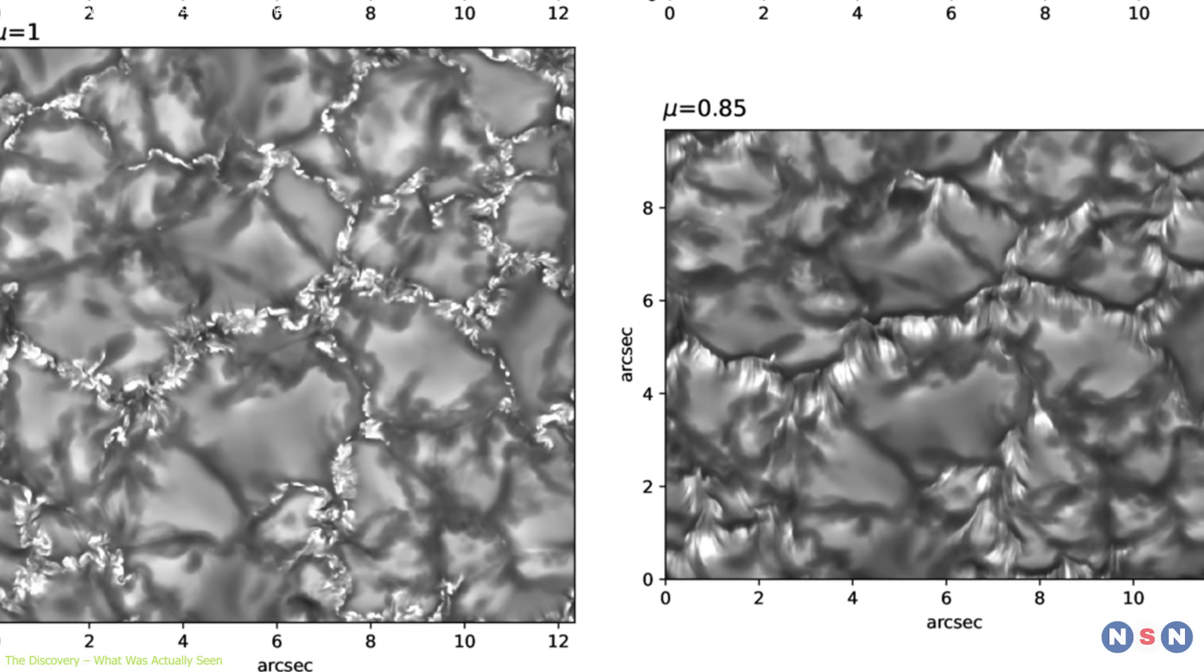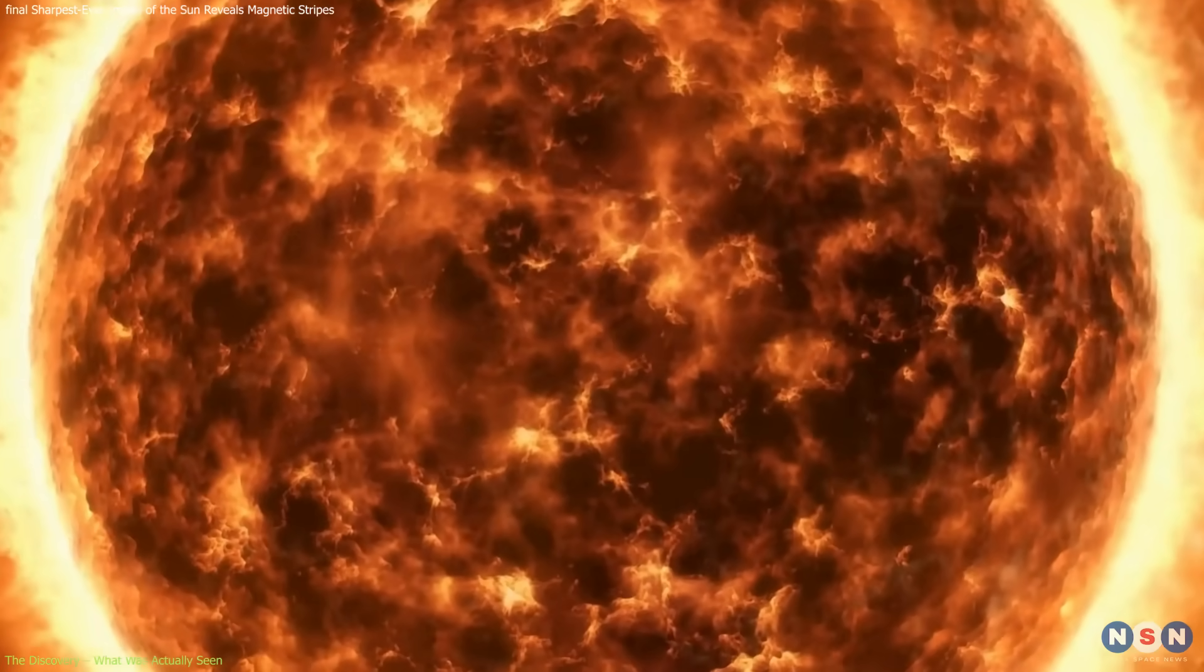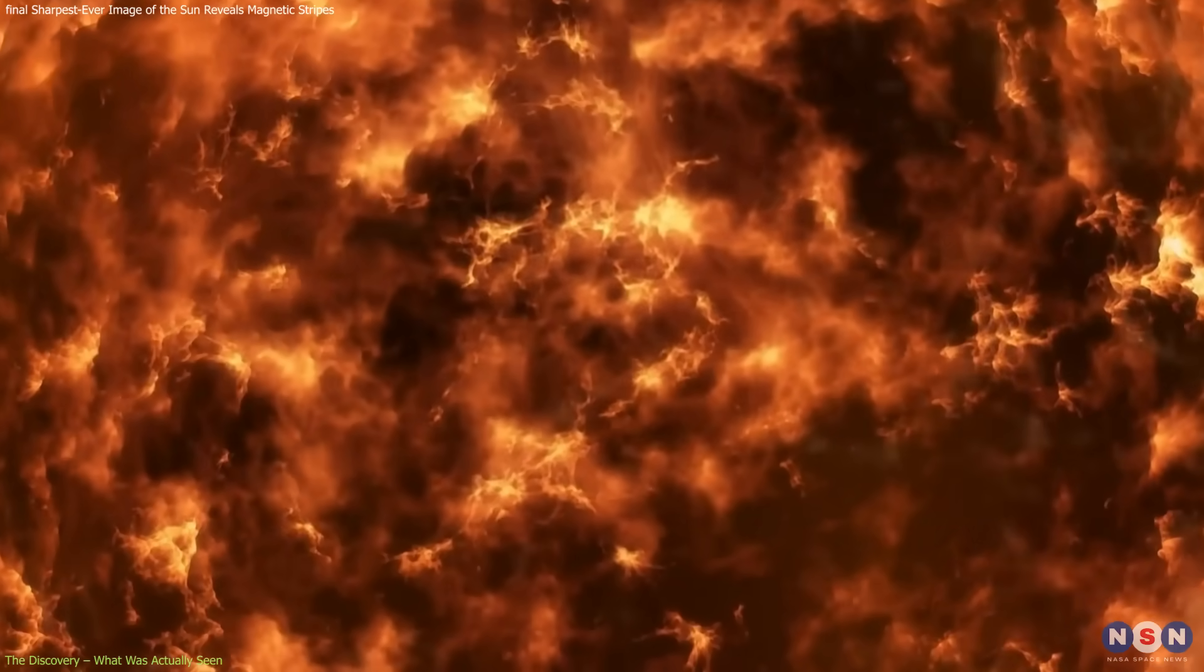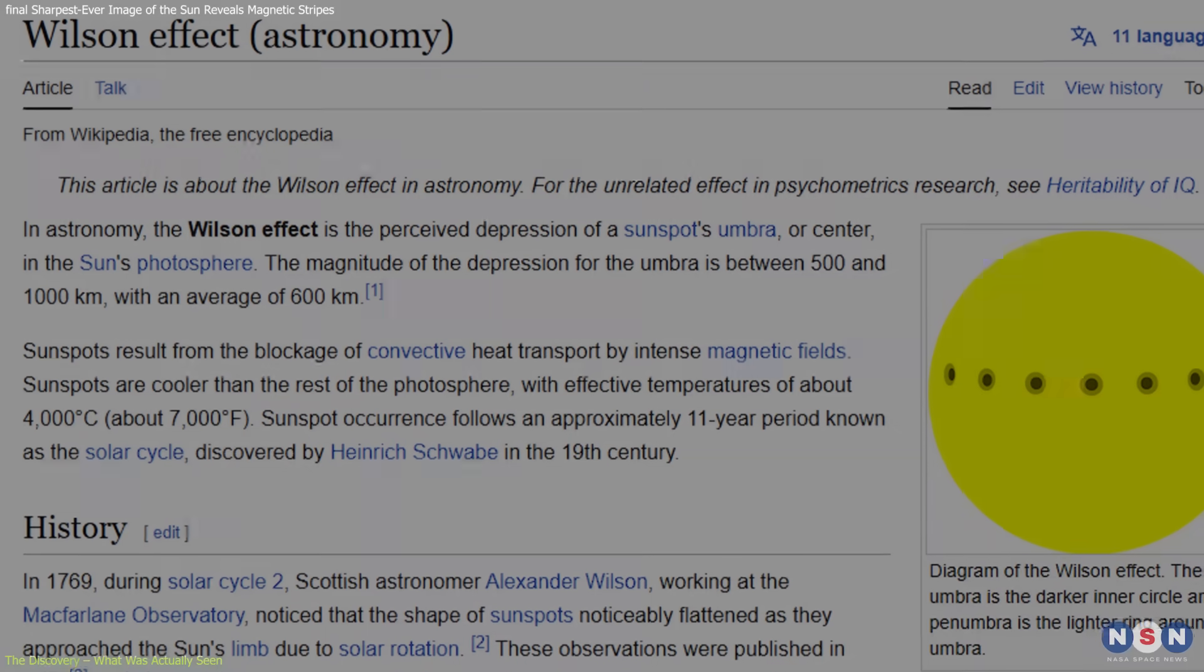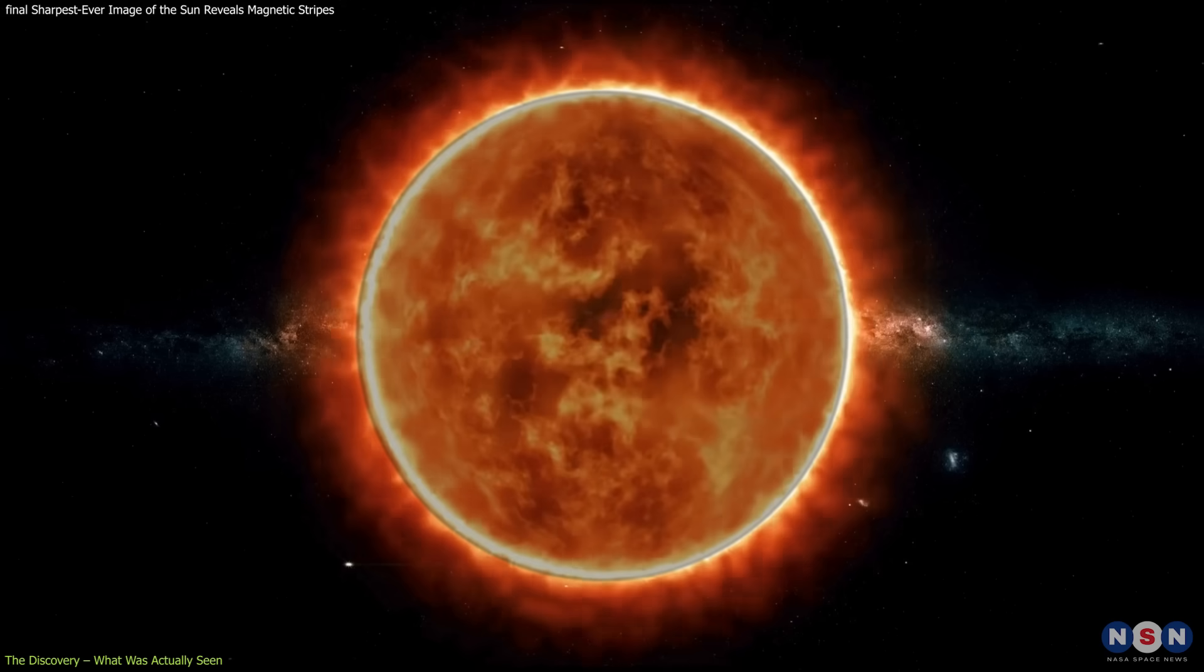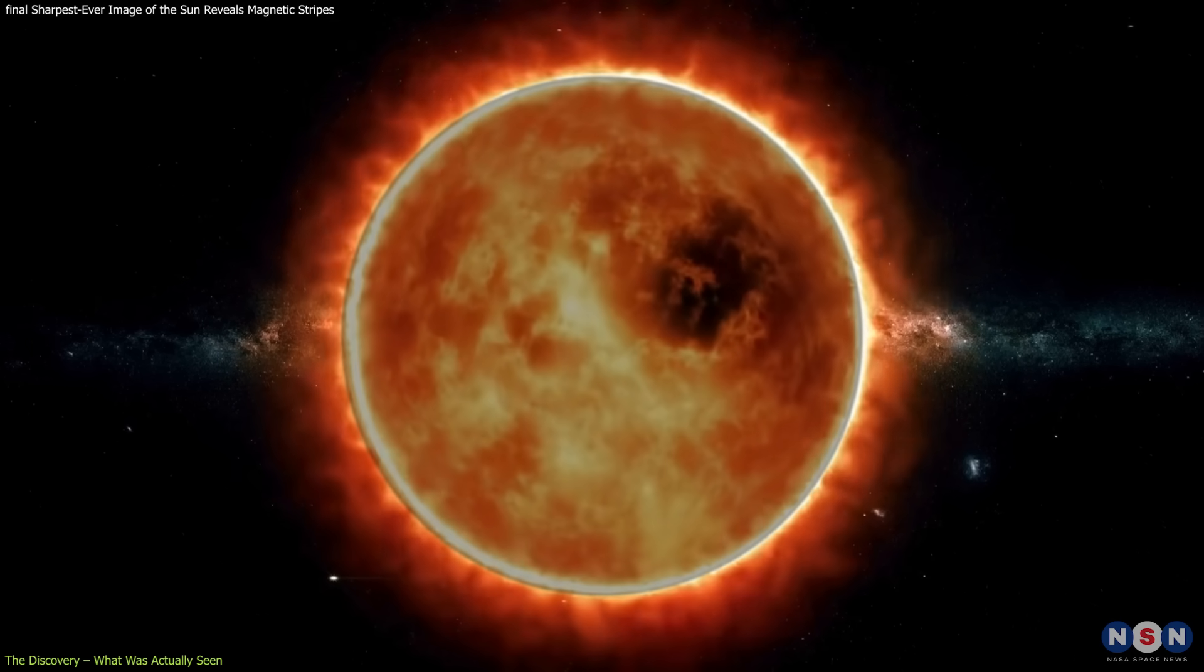These variations subtly affect the opacity and density of the surrounding plasma, shifting the depth at which light escapes, an effect known as the Wilson Depression. This produces slight changes in brightness visible in high-resolution imagery.